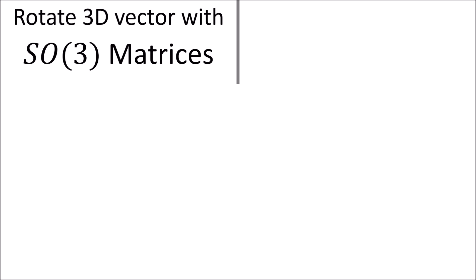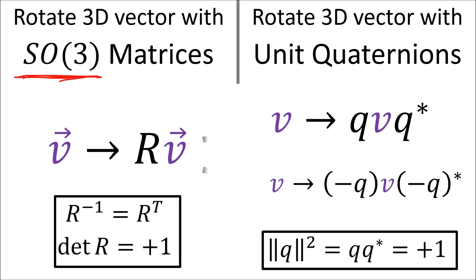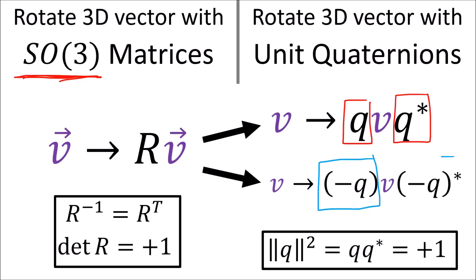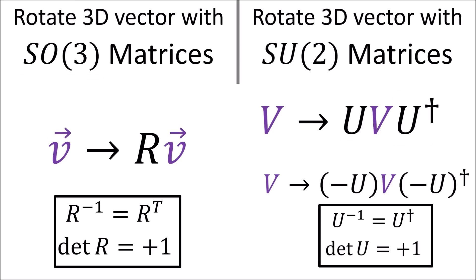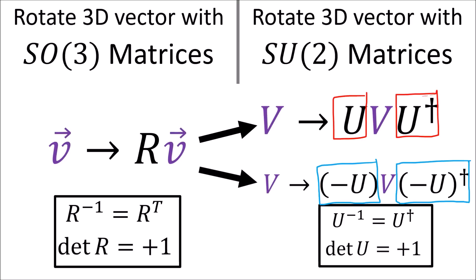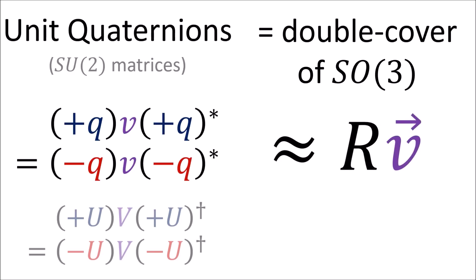Spin(3) is what we call the double cover of the rotation group SO3. We normally rotate 3D vectors using 3x3 matrices called SO3 matrices. For every SO3 matrix R, there are two quaternions that do the same rotation. If Q is a quaternion that does the same rotation as R, then negative Q will do the same rotation, since the pair of minus signs will cancel out in the double-sided transformation. The same reasoning applies to SU2 matrices — for a given SO3 matrix R, there are two SU2 matrices, plus U and minus U, that will perform the same rotation. So the unit quaternions, or equivalently the SU2 matrices, are considered the double cover of SO3.